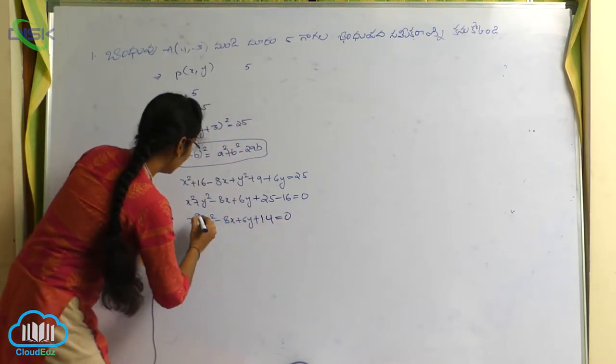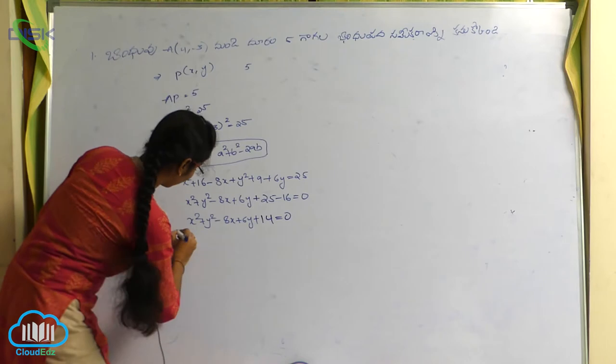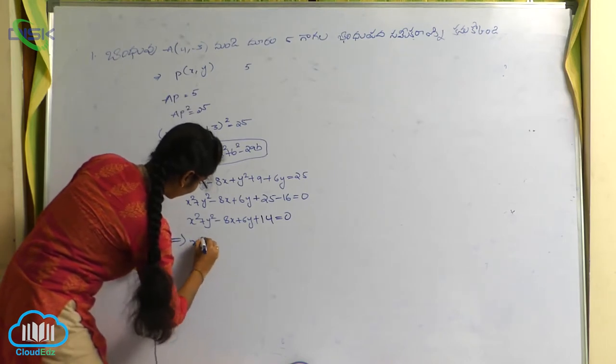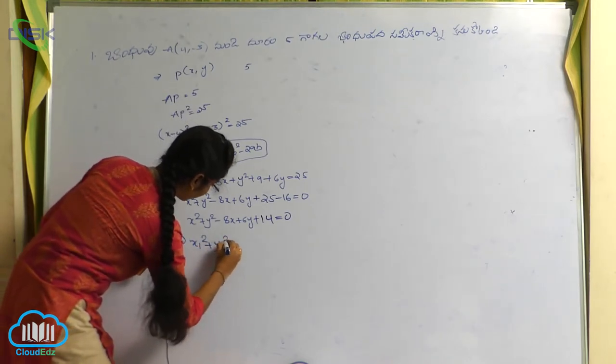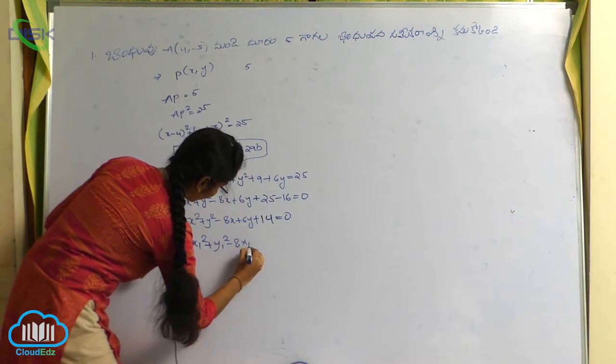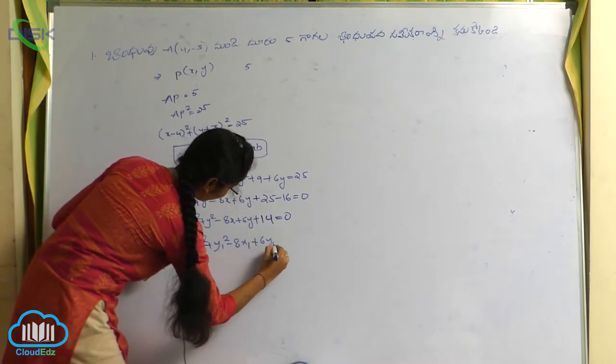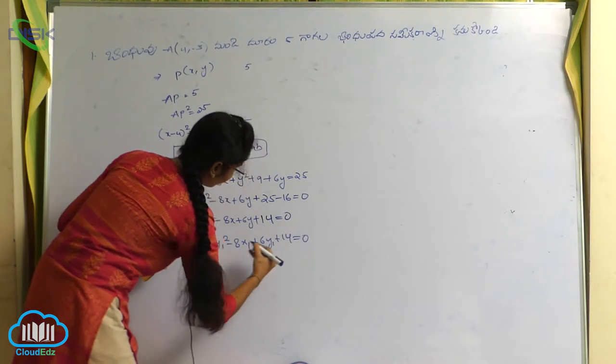Ok, ipadu maana ke x1, y1 terms ka avali. So, same equation, x1 square plus y1 square minus 8x1 plus 6y1 plus 14 is equals to 0.